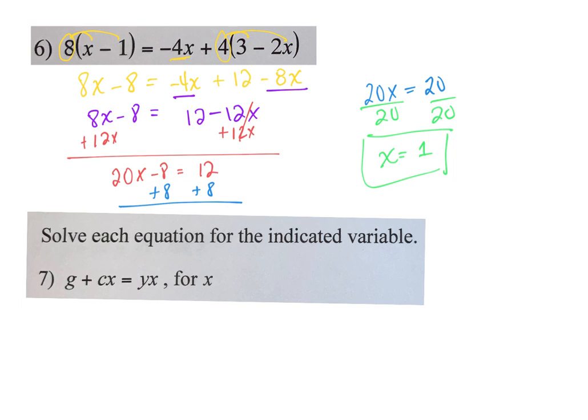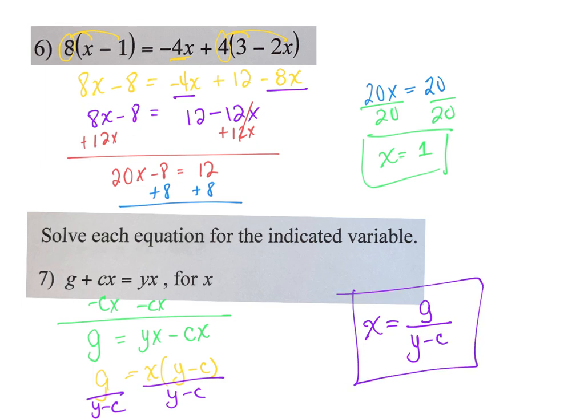yx minus cx. I'm going to factor out my x: x times the quantity y minus c. Then I am going to divide by that whole group. So x is going to equal g over y minus c.